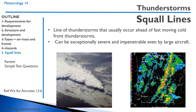A squall line is a line of thunderstorms that usually occurs ahead of fast-moving cold fronts. They can be exceptionally severe and impenetrable by even large aircraft. If there's a big squall line, you do not want to go through it — there's no way through, you can't pick your way between cells. You may have to turn around or make a large detour, possibly stopping for fuel. On weather radar, it appears as a solid line with no way through.